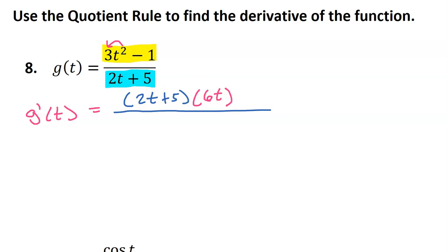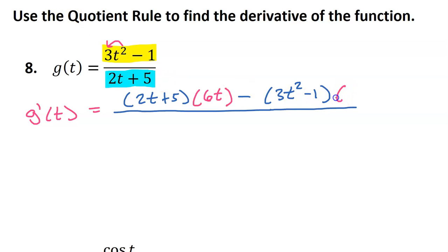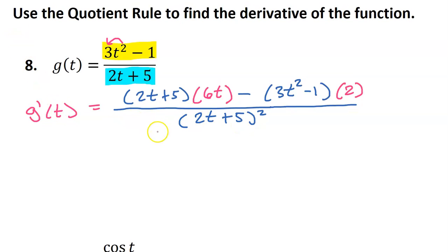So I've got low d high, less high d low. It's time to write the high function as is, and then d low — the derivative of the lower function. The derivative of 2t is just 2, and the derivative of a constant is nothing, so that's gone. So I have low d high less high d low. Draw the line down below, the bottom squared will go. So I'm going to put 2t plus 5 squared. That's the answer for problem number 8.